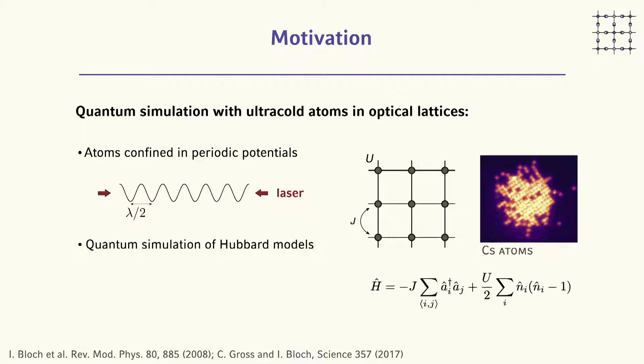I'll start with a brief recap about the platform. We are working with cold atoms in optical lattices using the traditional approach: we prepare degenerate quantum gases and load them in periodic potentials engineered by interfering laser beams. Atoms can move around in this lattice with tunnel coupling J and they interact on site with Hubbard interaction energy U. This allows us to study Hubbard-type Hamiltonians, looking at ground state phase diagrams, non-equilibrium dynamics, and we also have access to local observables to take snapshots of the density distribution.